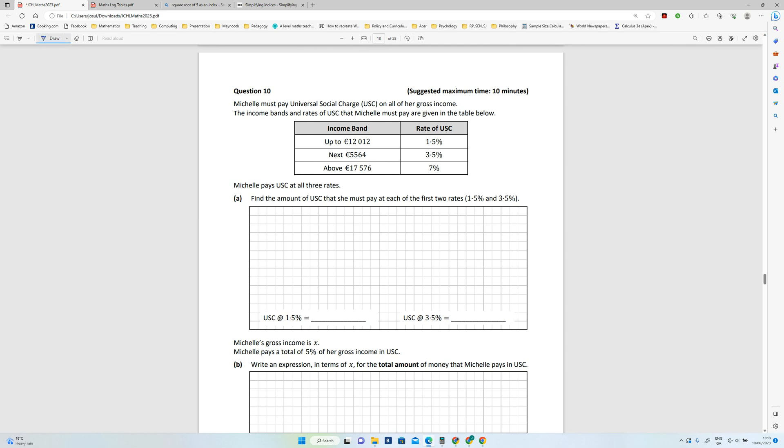Okay, so for the first twelve thousand and twelve euros she must pay this much. So that's going to be 12,012 multiplied by 1.25 percent. We get the answer there. The other one then is five thousand five hundred sixty-four multiplied by three point five percent.